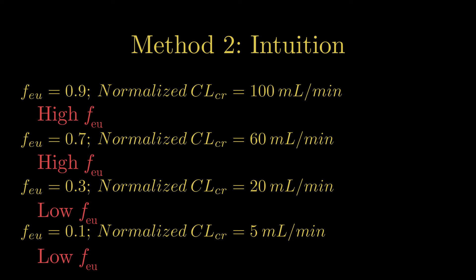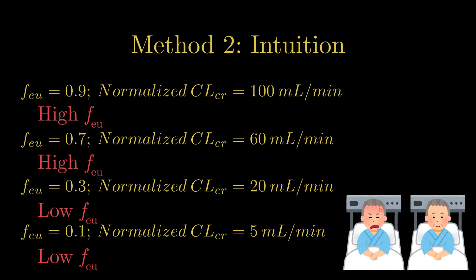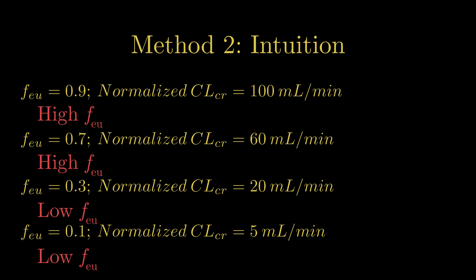The normalized creatinine clearance compares our patient to a baseline of 120 milliliters per minute, and higher numbers would mean that we're able to clear drug with our kidneys better. So if we're looking for a situation where we need a big dose adjustment, we're looking for low creatinine clearances.